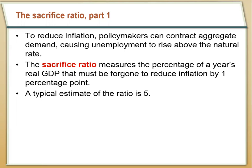Quantifying this requires us to use the sacrifice ratio. Basically, we're trying to convert how much GDP we're going to lose to reduce inflation by one percentage point. A lot of estimates have put the sacrifice ratio fairly high, at about five. So basically, to reduce inflation by one percentage point, we would have to reduce real GDP by five percent in one year.